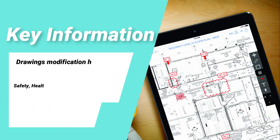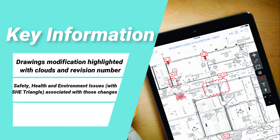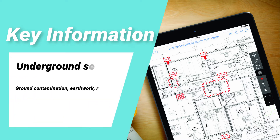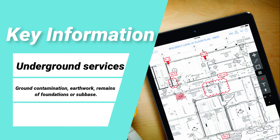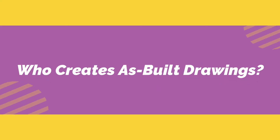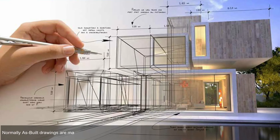As-built drawings include the following key information: drawing modifications highlighted with clouds and revision numbers; safety, health and environment issues with an SHE triangle associated with those changes; underground services; ground contamination; earthworks; and remains of foundations or sub-base.